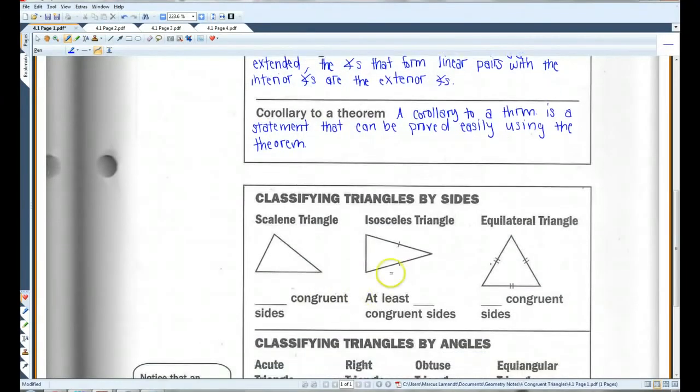All right, some different kinds of triangles. Classifying triangles by sides. A scalene triangle has no congruent sides. An isosceles triangle has at least two congruent sides. And an equilateral triangle has three congruent sides, all congruent sides.